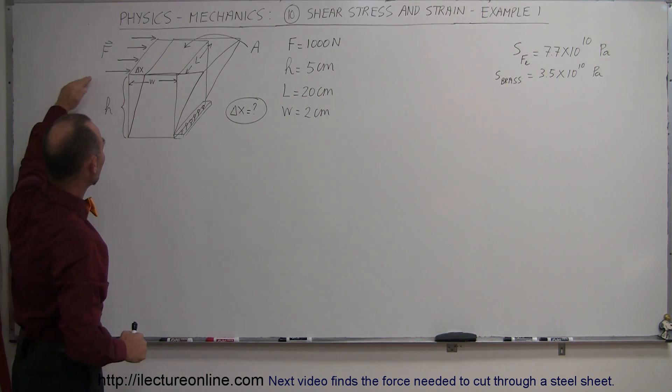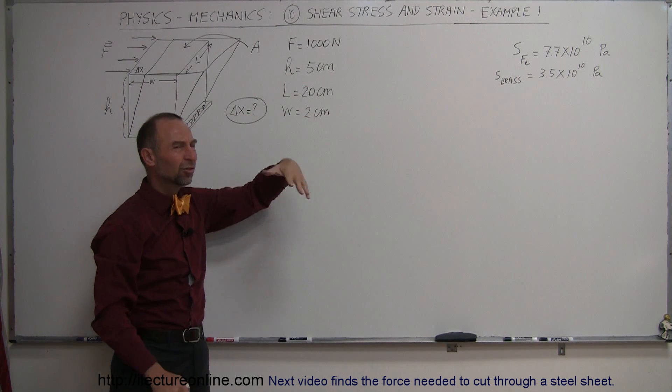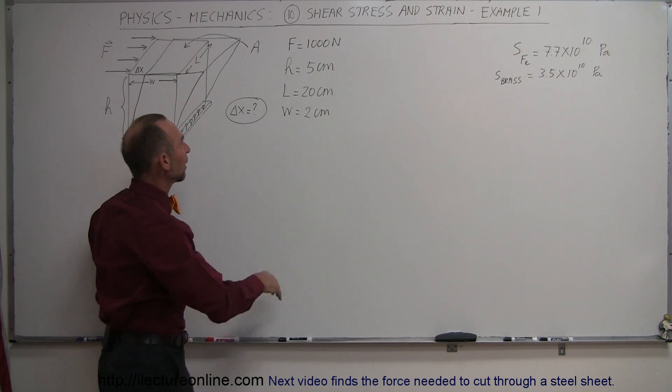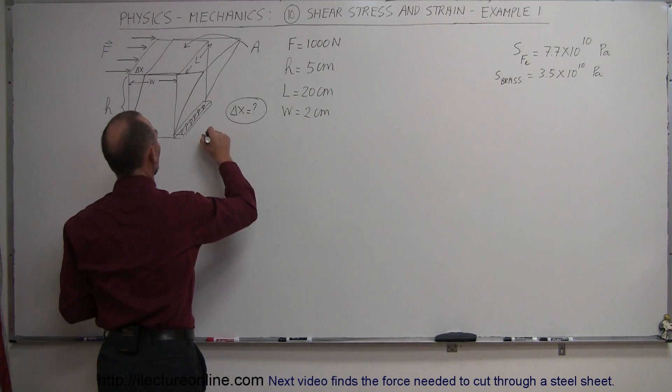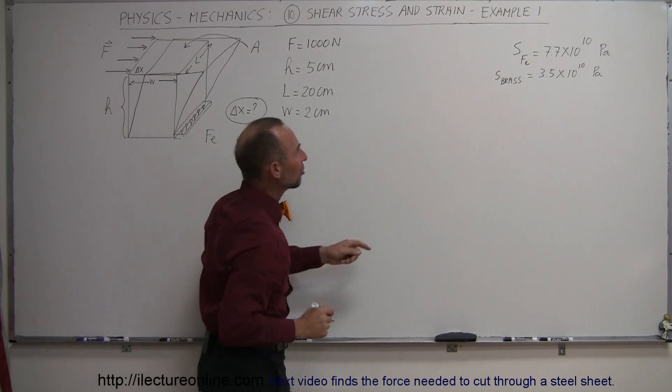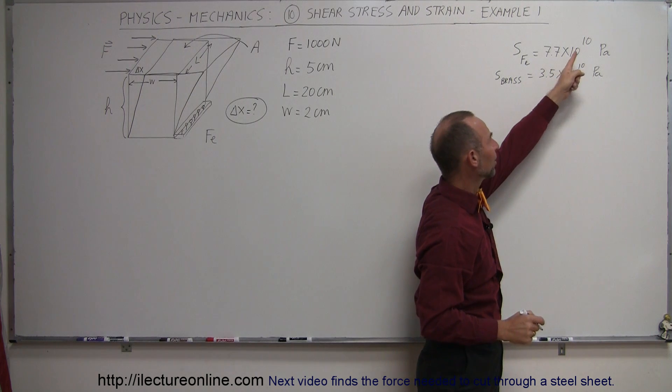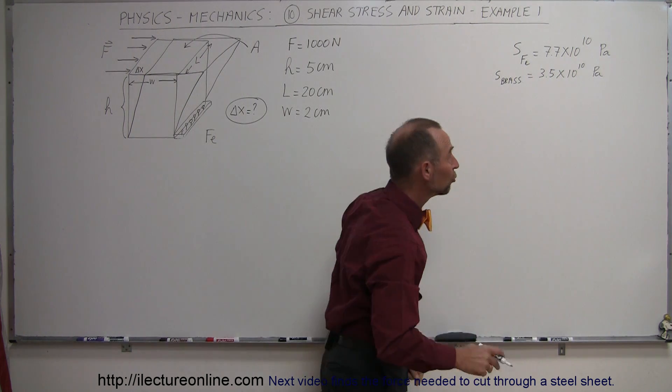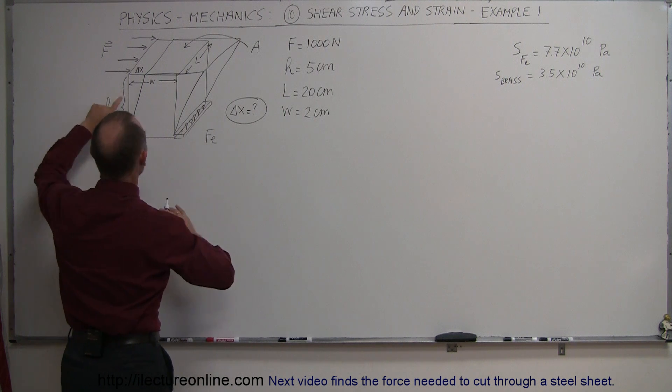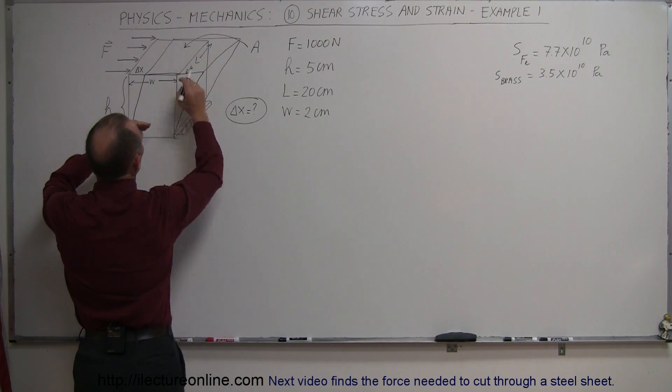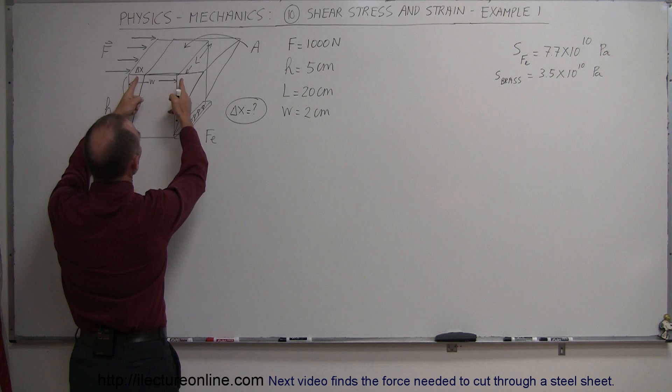So now the question is, if we apply a force of 1,000 newtons, which is roughly 200 pounds, and we have a block of iron—let's use iron—and here we have the shear modulus of iron, which is 7.7 times 10 to the 10 pascals. Pascals of course is newtons per square meter, and let's say that the height of the block is 5 centimeters, the length of the block is 20 centimeters, the width of the block is 2 centimeters.